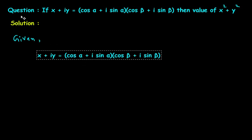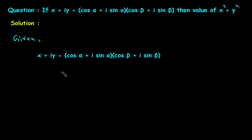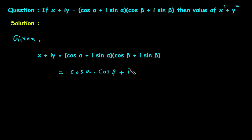x plus iy is equal to cos alpha plus i sine alpha, multiplied by cos beta plus i sine beta. We will simplify this bracket by expanding: cos alpha into cos beta, then cos alpha into i sine beta, so this will be plus i times cos alpha into sine beta.